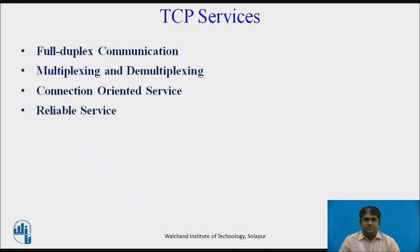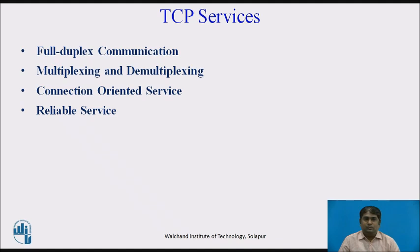TCP is a connection-oriented protocol. When a process at site A wants to send and receive data from another process at site B, three phases occur. First, the two endpoints establish a virtual connection between them. Second, data are exchanged in both directions. Third, the connection is terminated. Here, a virtual connection is established — not a physical connection. The TCP segment is encapsulated in an IP datagram and can be sent out of order, lost, corrupted, and then re-sent, with each segment possibly routed over a different path to reach the destination. TCP creates a stream-oriented environment in which it accepts the responsibility of delivering the bytes in order to the other site.